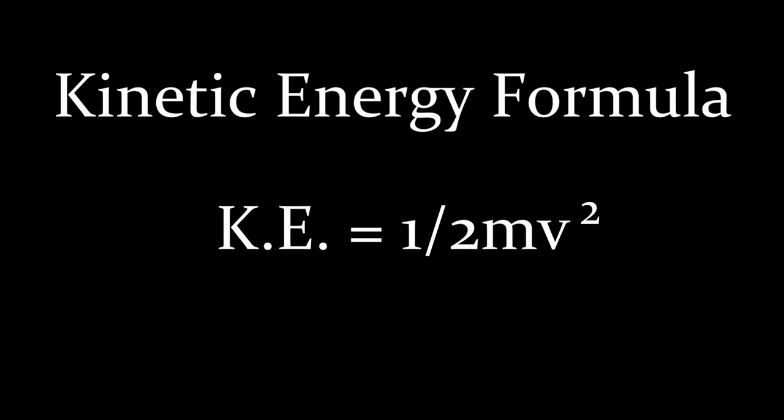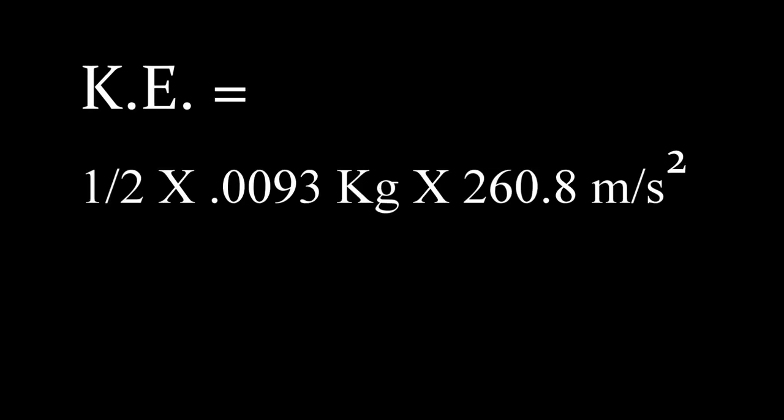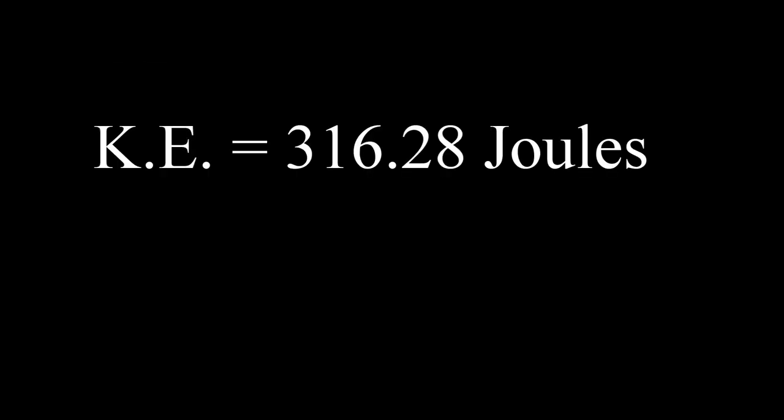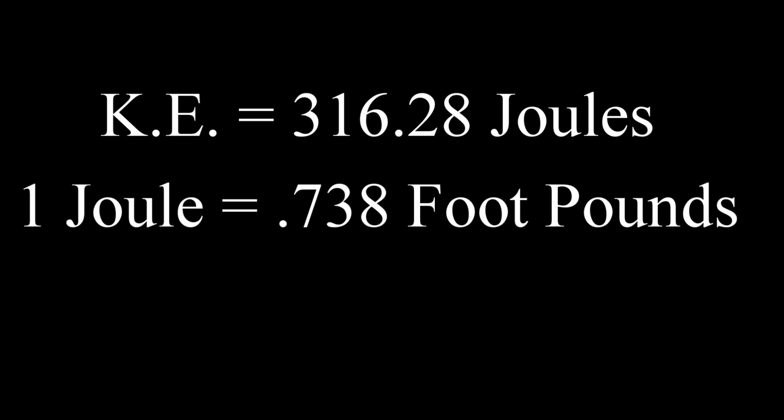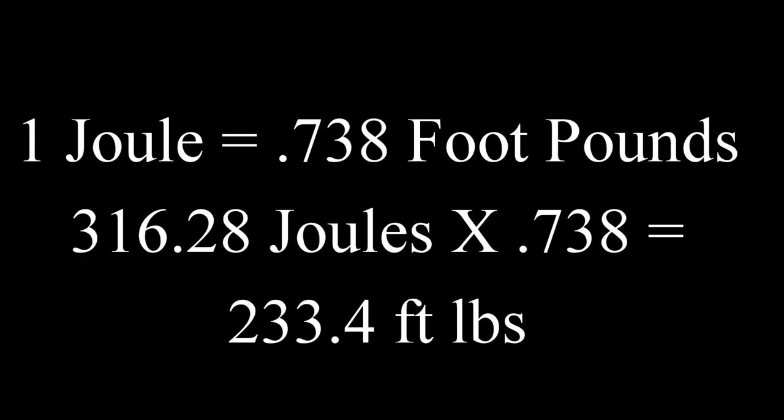Remembering that our kinetic energy formula is one half the mass times the velocity squared, we now have all the right metric figures to put into the formula. We can take one half times 0.0093 kilograms times 260.8 meters per second squared and end up with 316.28 joules. Since we know that one joule equals 0.738 foot pounds, we can take our 316 joules times 0.738 and end up with 233.4 foot pounds.